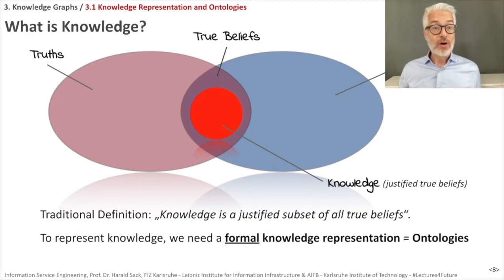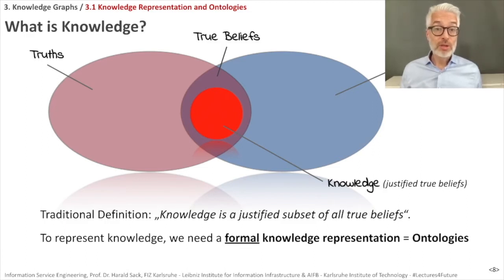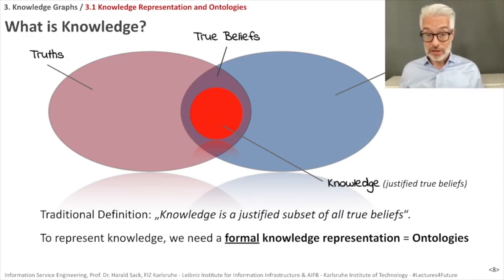The traditional definition of knowledge is: knowledge is a justified subset of all true beliefs. If we want to represent knowledge with the help of a machine, what we need is a kind of formal knowledge representation, or ontology. What this is, we are going to clarify soon.